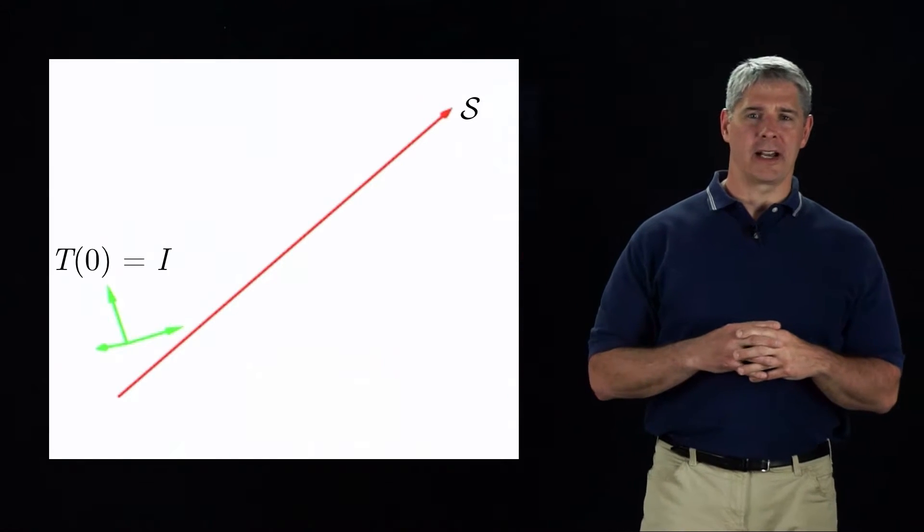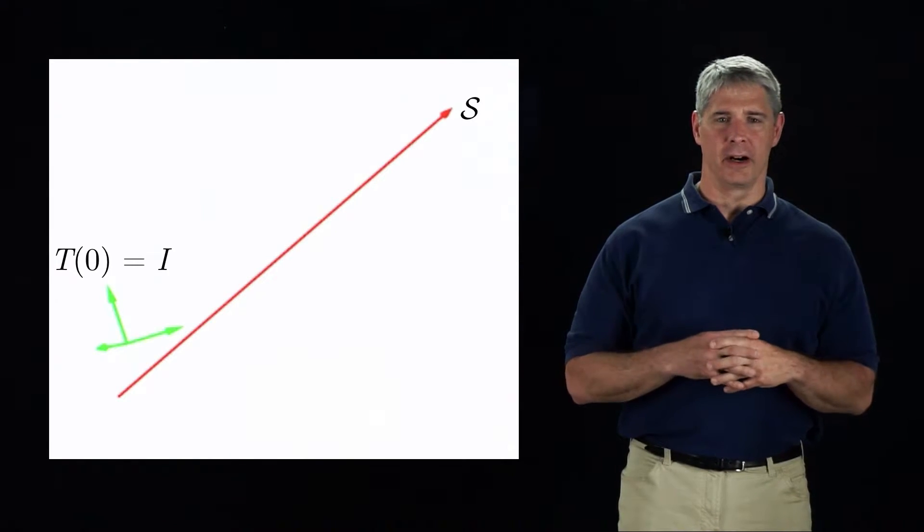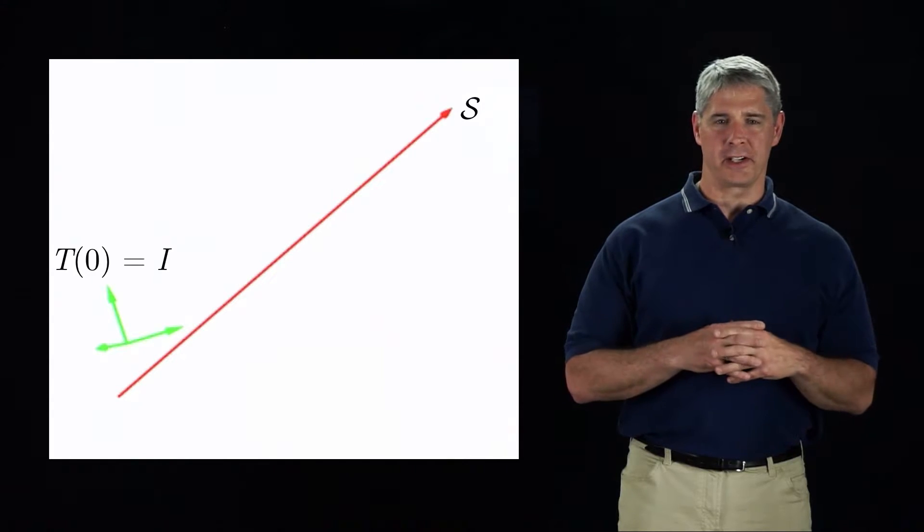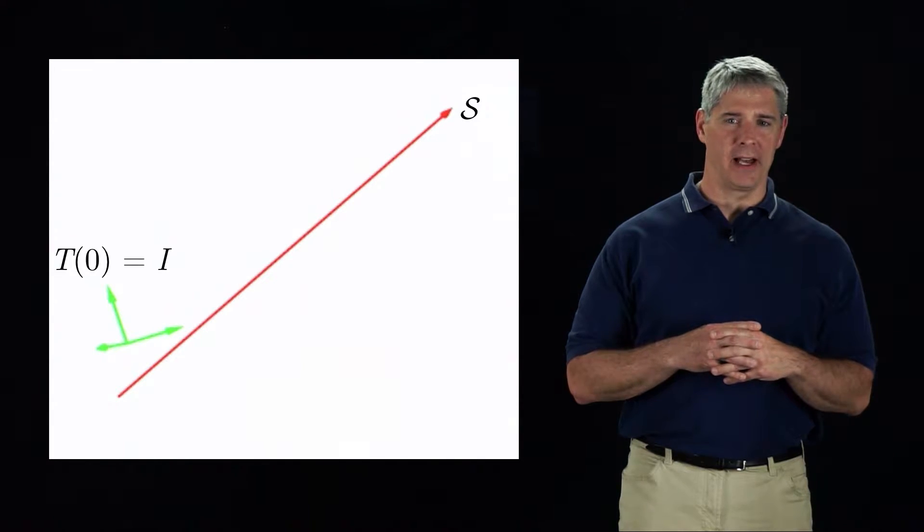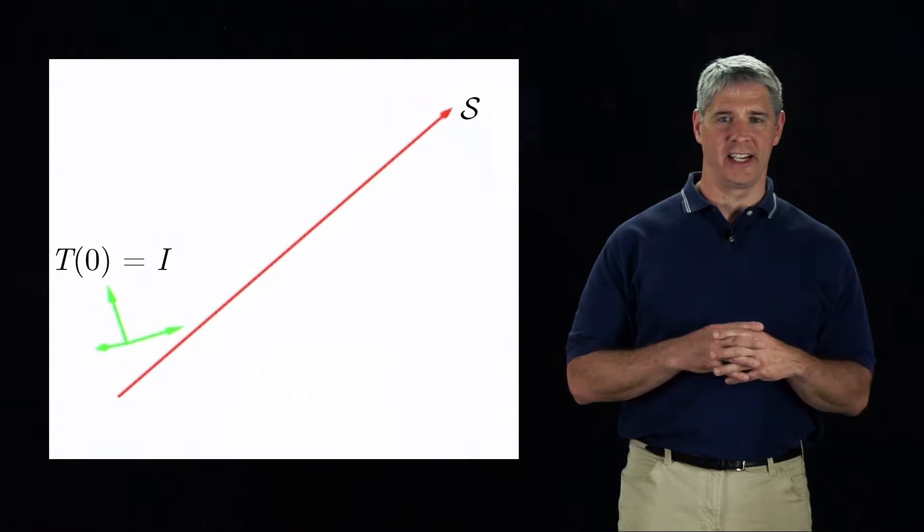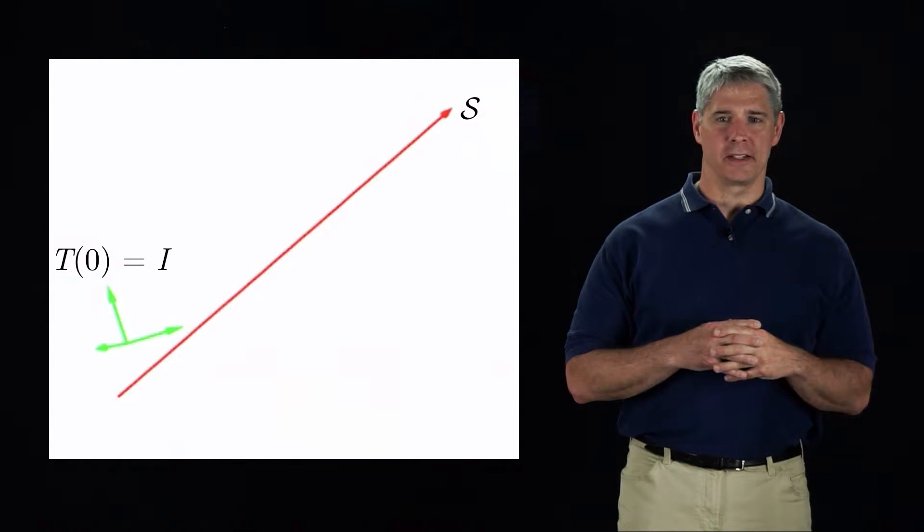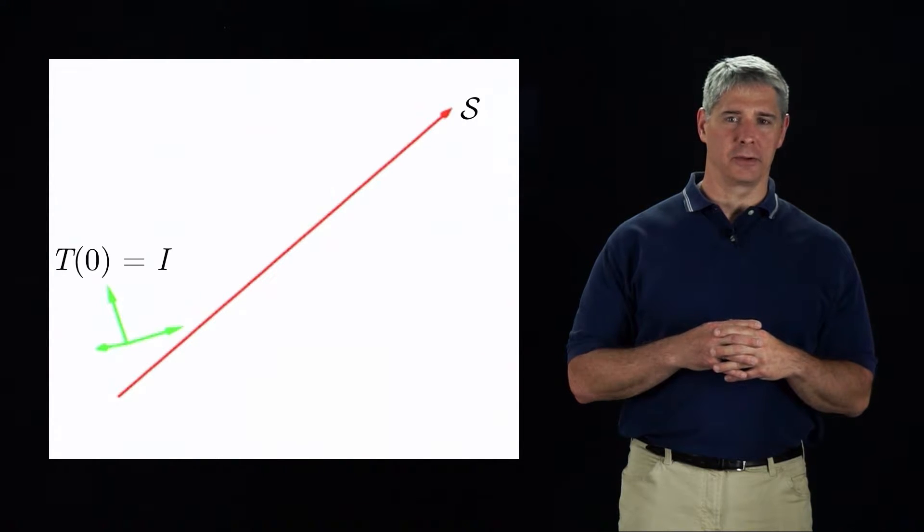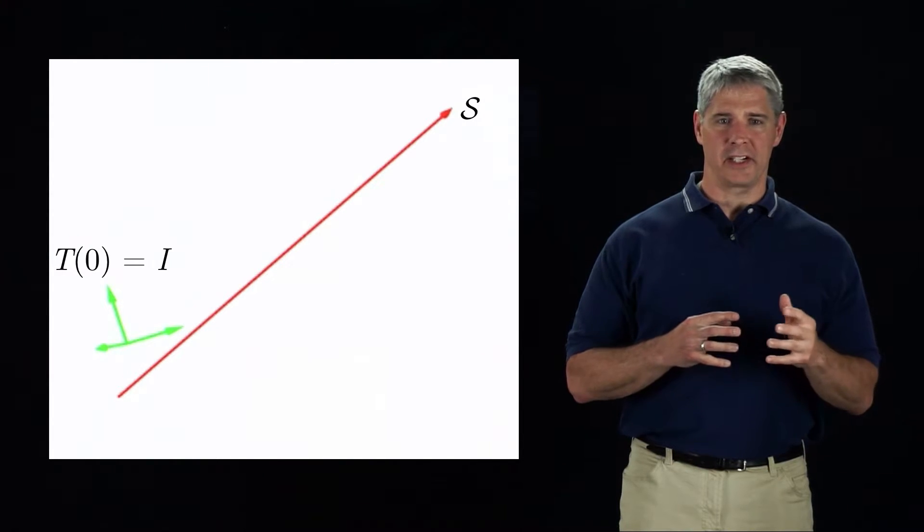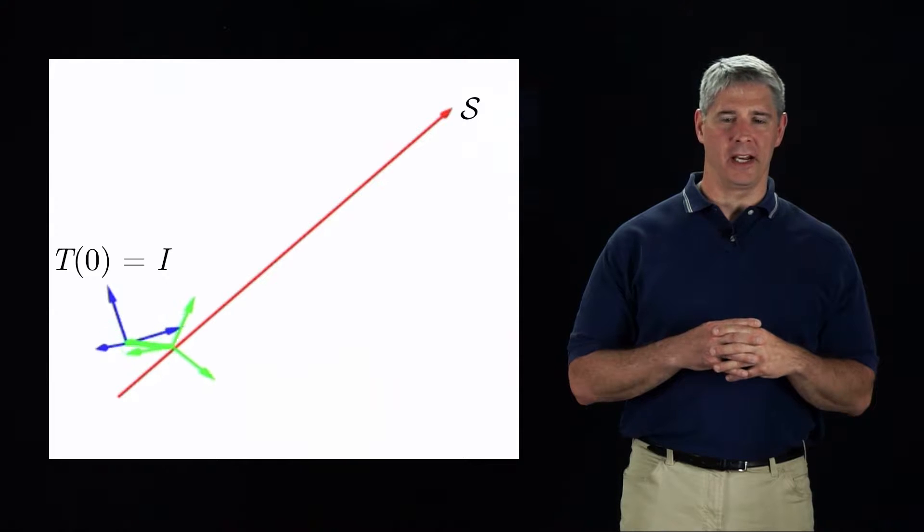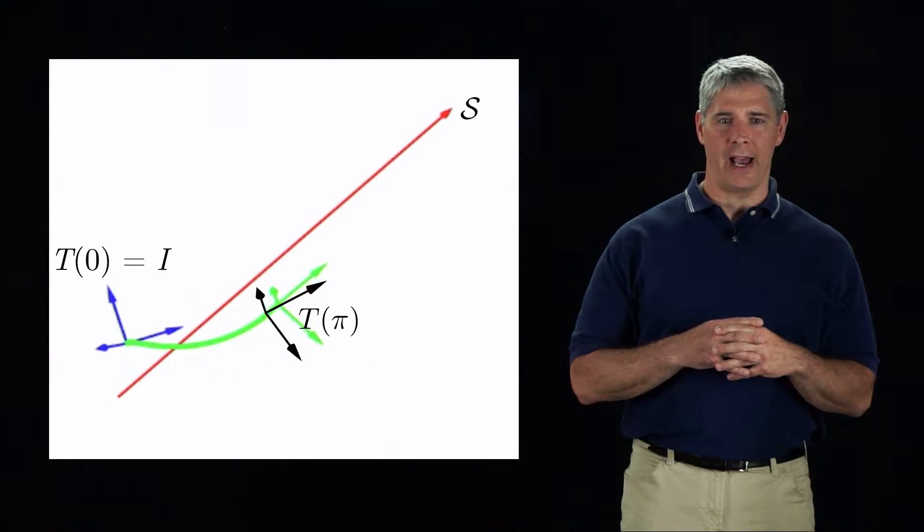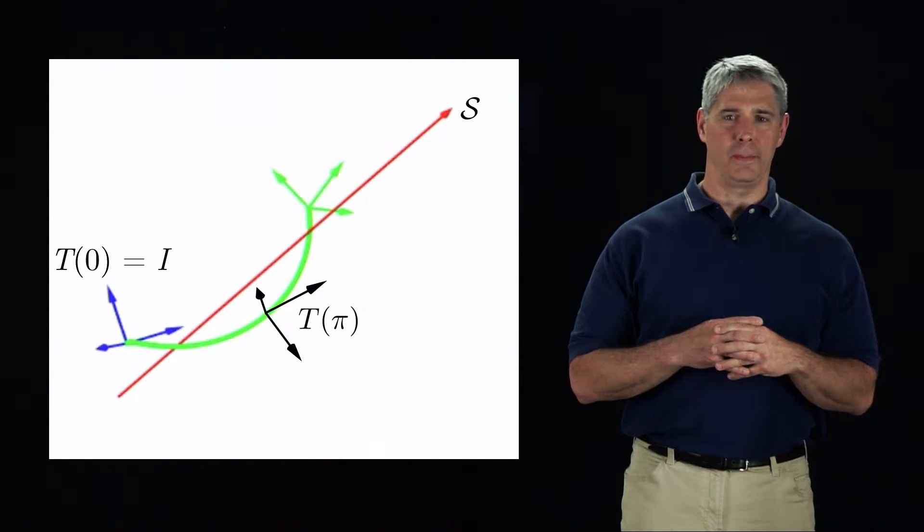This animation shows a screw axis s in the frame at time zero. Let's say that this configuration is coincident with the space frame s, so its representation is the identity matrix. Now we let the frame twist about the screw axis at a rotational speed theta dot equals one. The animation shows the configuration achieved at times t equals pi and t equals two pi.